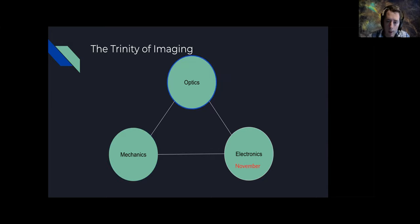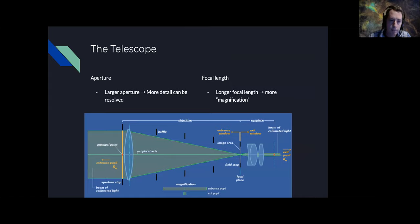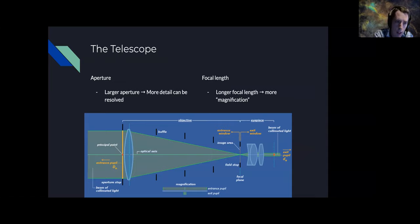This session covers optics, and electronics will come in November. The two really big factors in the telescope when considering which telescope to use for imaging are aperture and focal length.